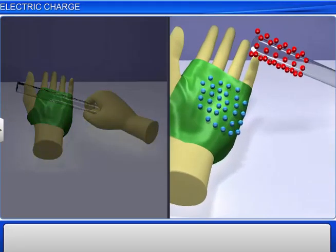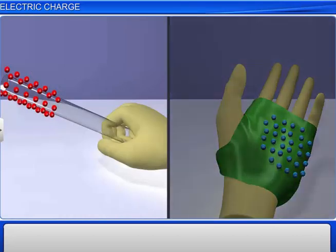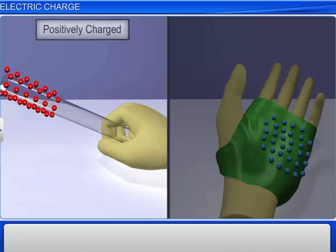The material that lost electrons now has a deficit of electrons and hence becomes positively charged. And the one that gained electrons becomes negatively charged.